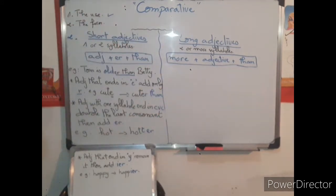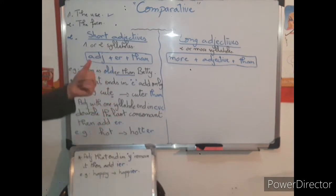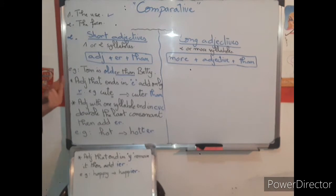Sometimes there are special spelling rules. First: adjectives that end in -E — add only -R. For example, 'cute' ends in E, so we add only R: 'cute' becomes 'cuter than.' Second: adjectives with one syllable ending in CVC — consonant, vowel, consonant — we double the last consonant then add -ER.